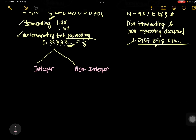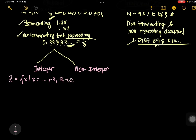Integers are defined as: x such that x equals negative 3, negative 2, negative 1, 0, 1, 2, 3, and so on. That is an integer. An example of non-integer is 0.25, 1.30, 2.40 — these are examples of non-integer.